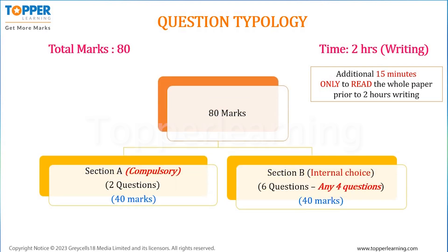The 80 marks are distributed into 2 sections, A and B, equally — each section with 40 marks. Whole section A is compulsory, while in section B there will be internal choice. Section A has 2 questions. Section B has total 6 questions, from which you have to attempt any 4 questions.